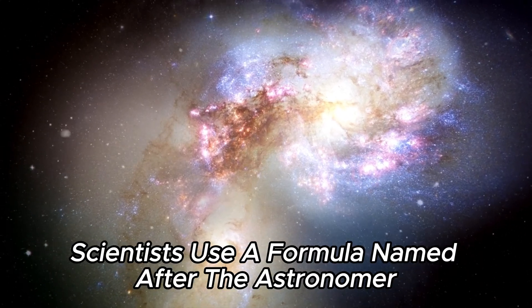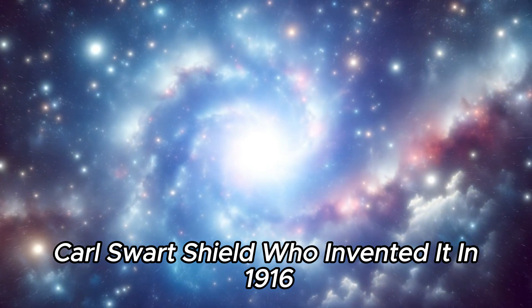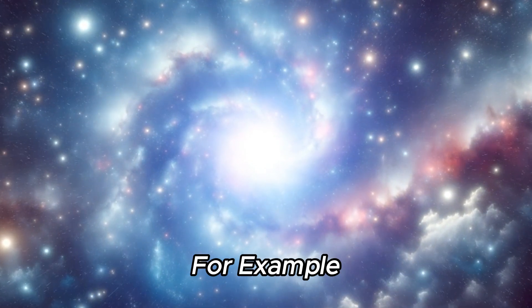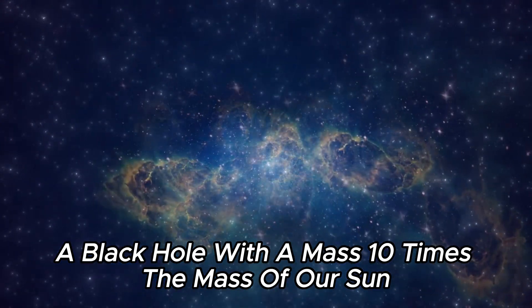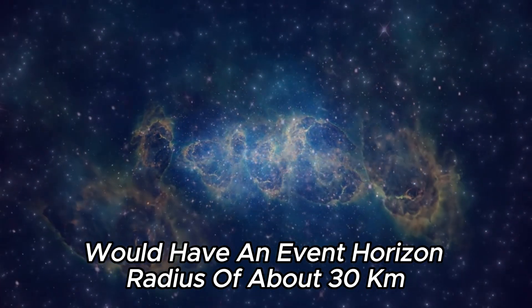Scientists use a formula named after the astronomer Carl Schwarzschild, who invented it in 1916, to calculate the event horizon ray. For example, a black hole with a mass 10 times the mass of our Sun would have an event horizon radius of about 30 kilometers.